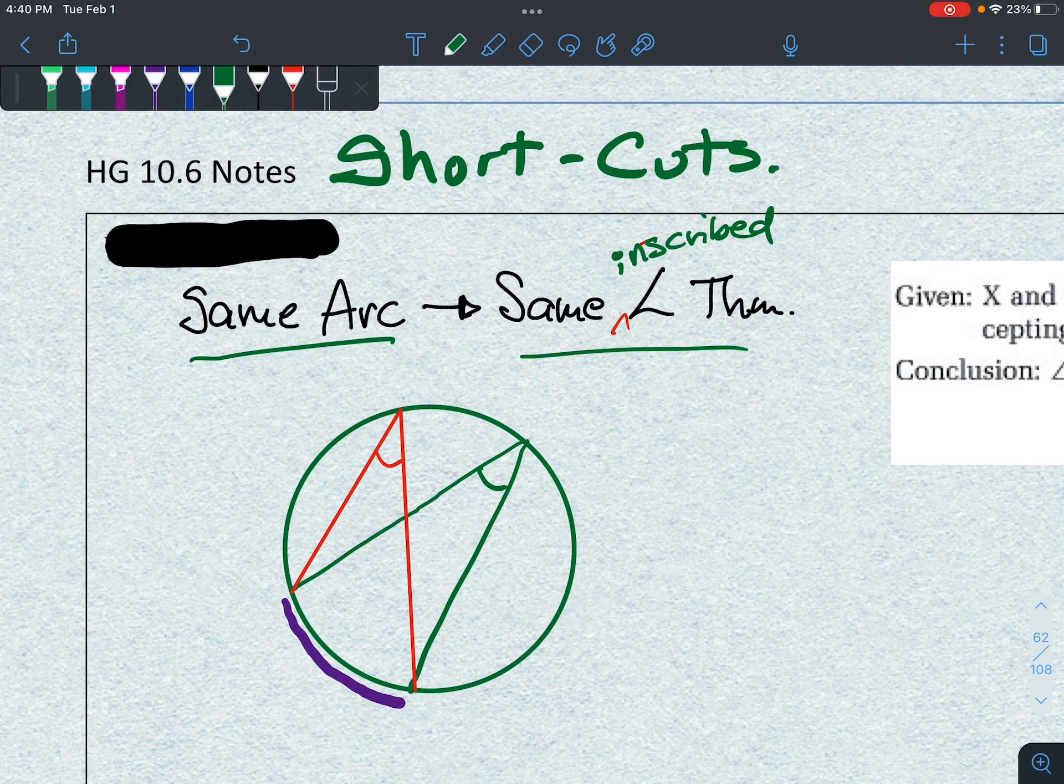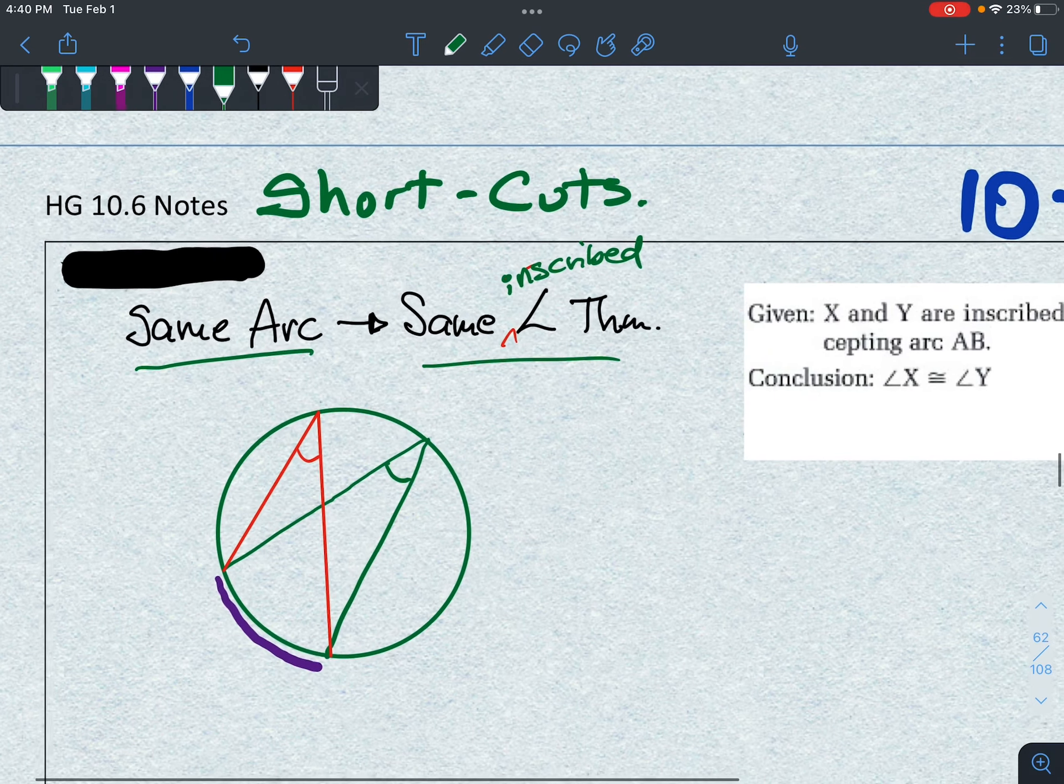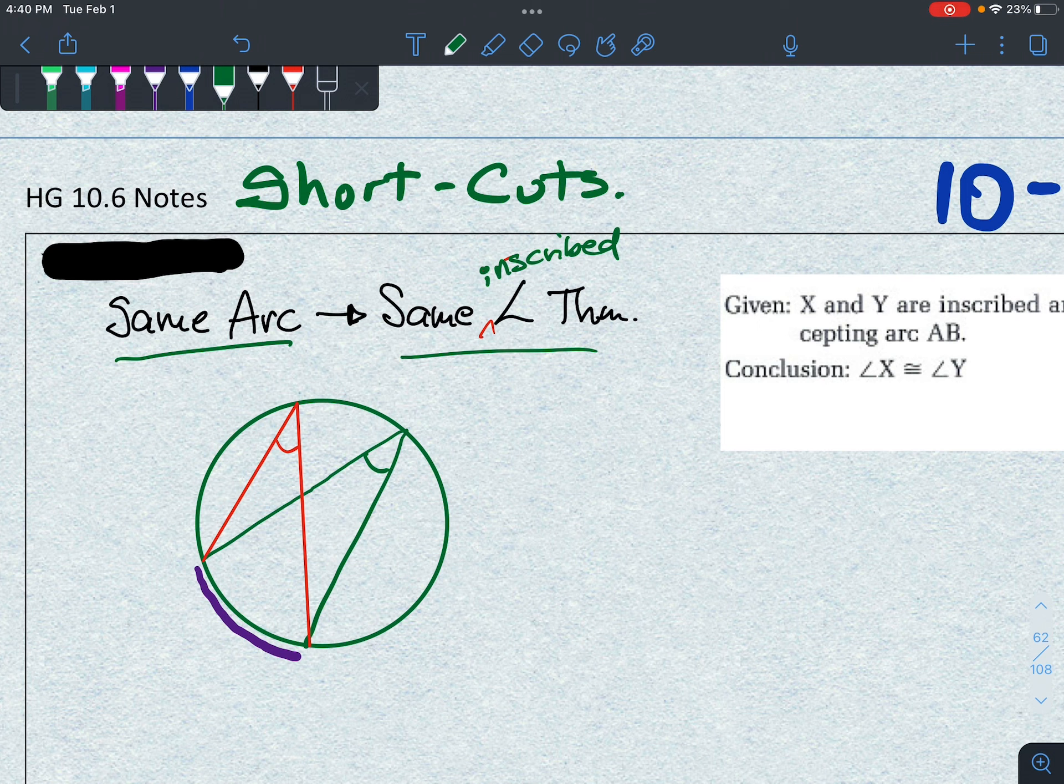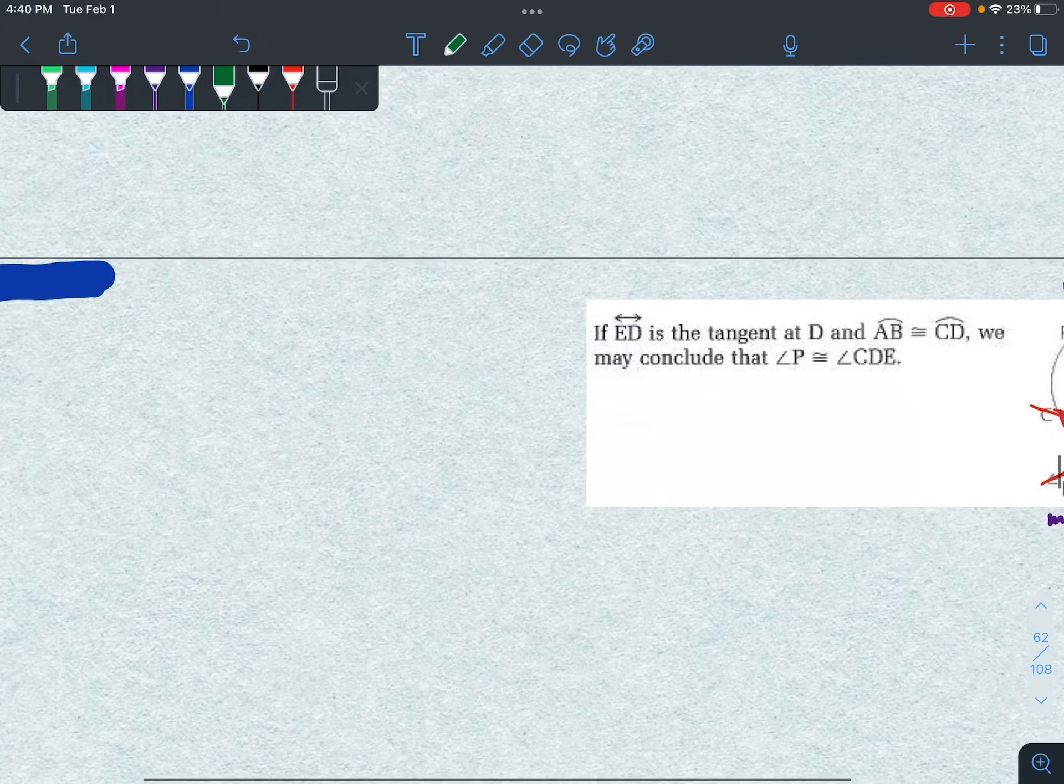Then guess what? These two angles have to be congruent. Should be fairly obvious because those inscribed angles will be half the arc measurements, so they'll be the same. You'll use the concept more than you will quote it. I don't think you quote it at all.